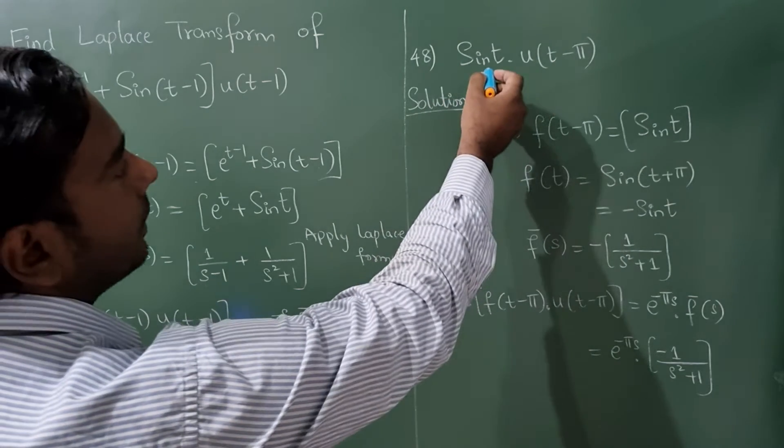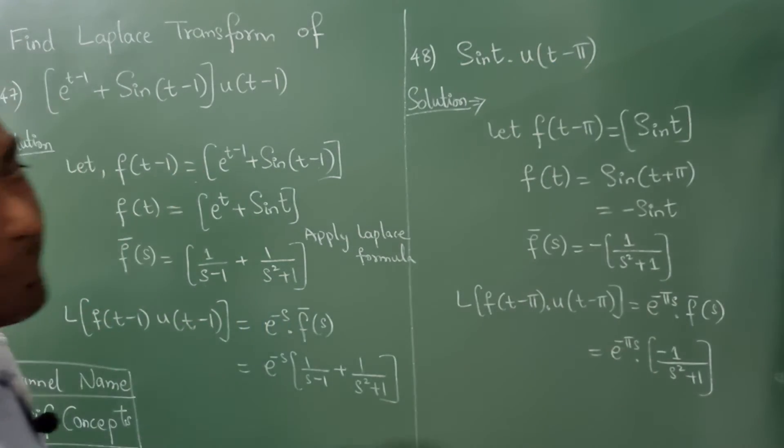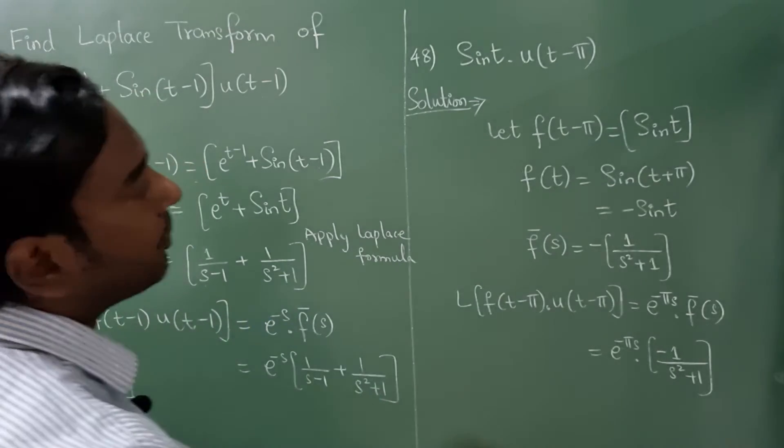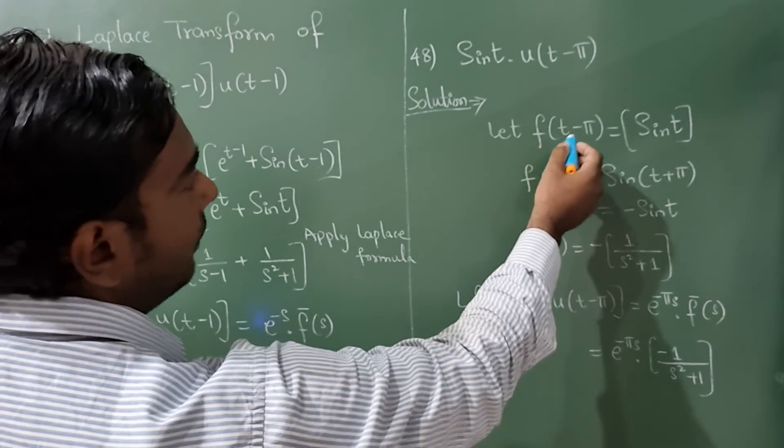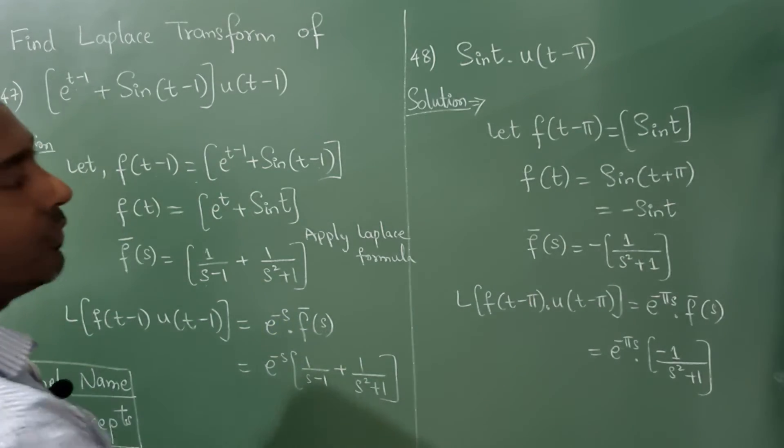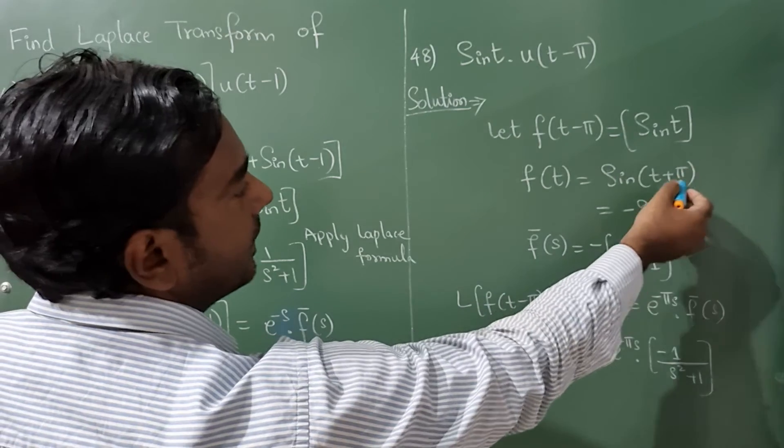Similar question: sin t into u of t minus pi. Here it was t minus 1, here it is t minus pi. Now f of t minus 1 is equal to sin t but we want f of t. So minus t goes to the right hand side it will become plus.